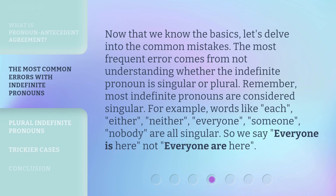Now that we know the basics, let's delve into the common mistakes. The most frequent error comes from not understanding whether the indefinite pronoun is singular or plural. Remember, most indefinite pronouns are considered singular. For example, words like each, either, neither, everyone, someone, and nobody are all singular. So we say 'everyone is here,' not 'everyone are here.'